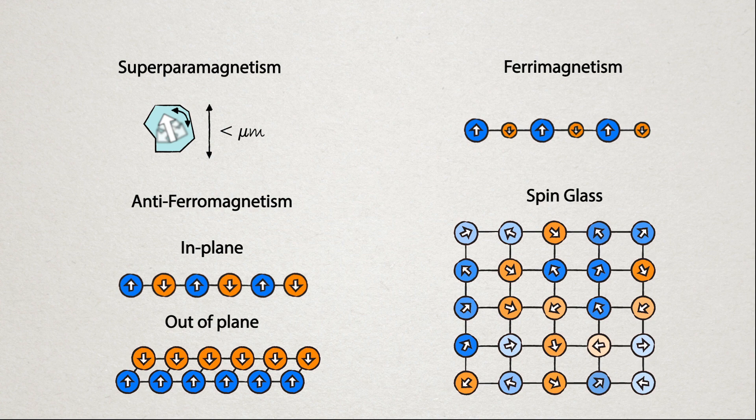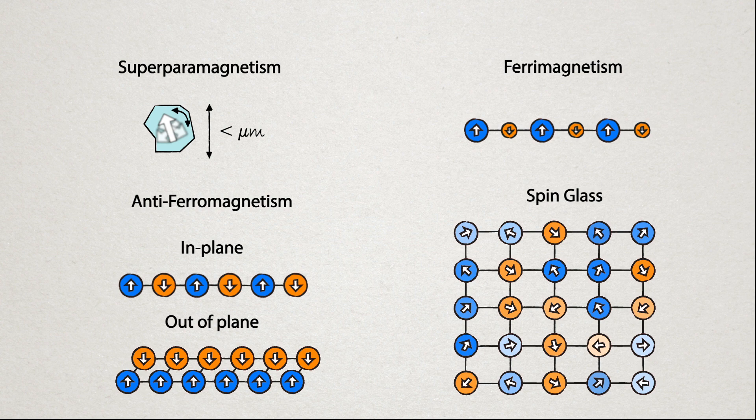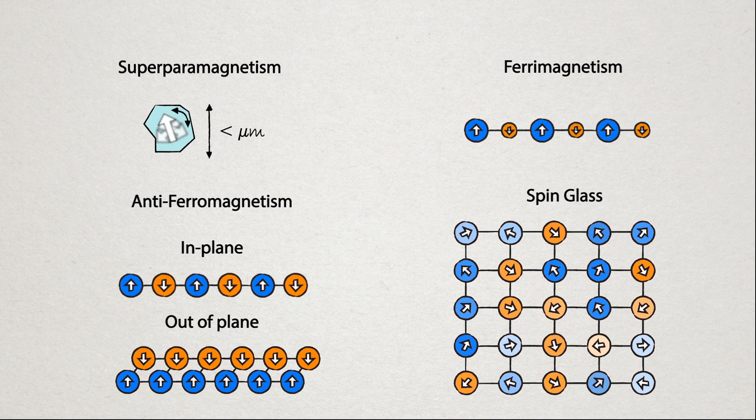This is called spin glass because the magnetic structure resembles that of the amorphous structure of glass, that is that it's not crystalline.